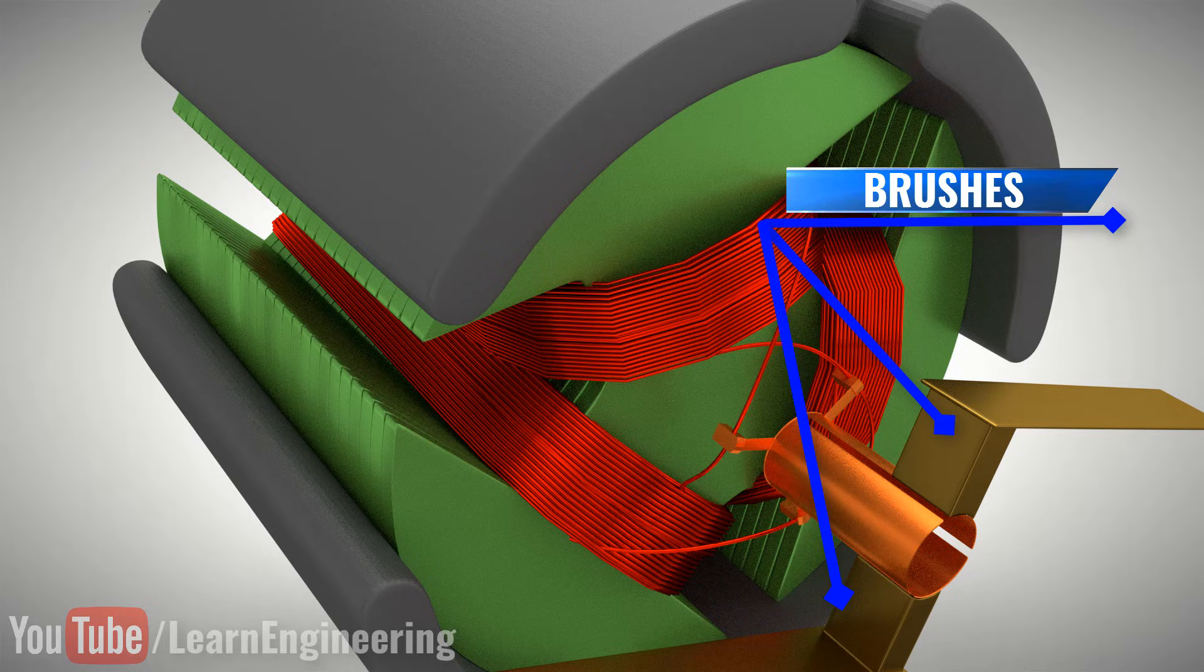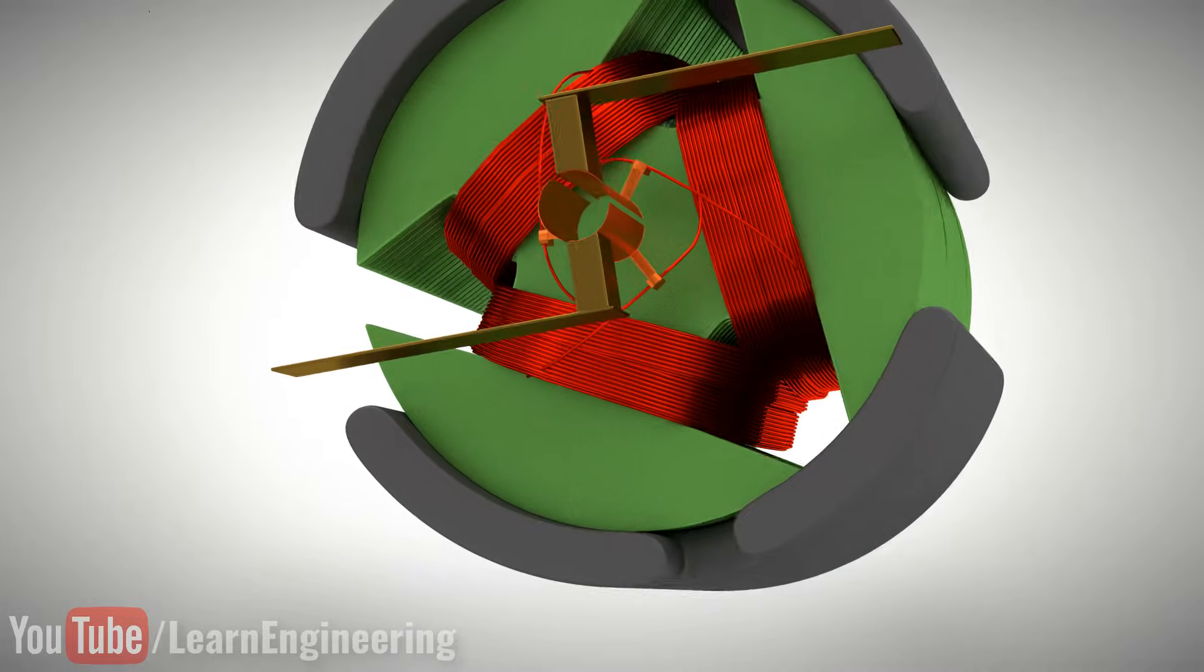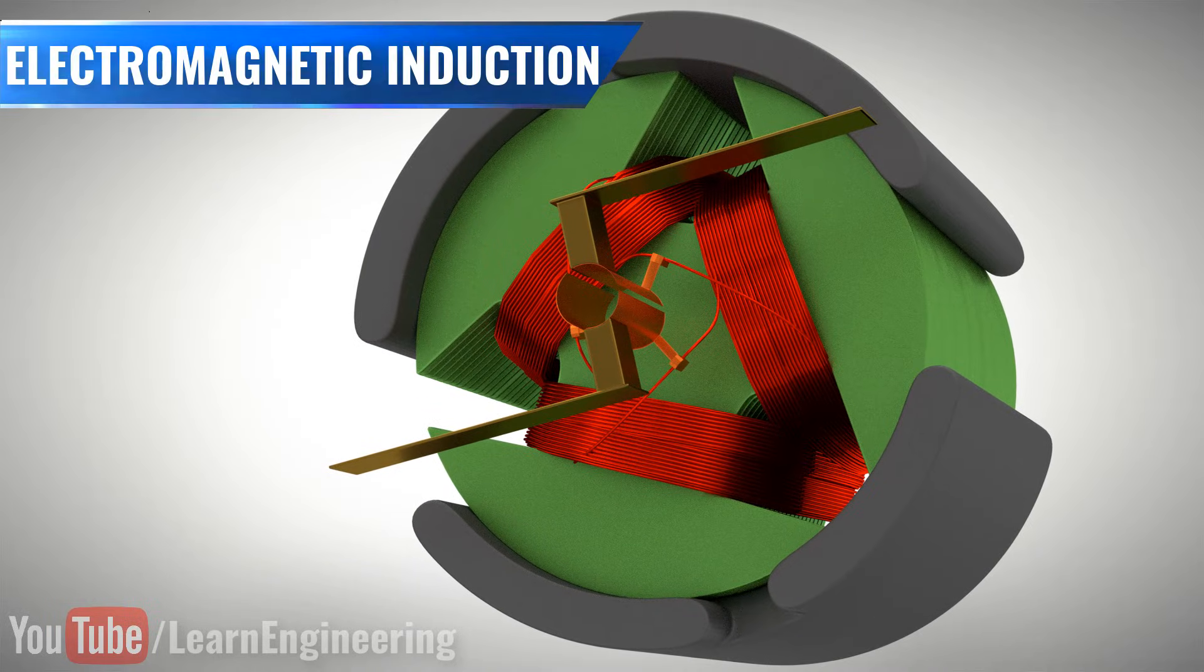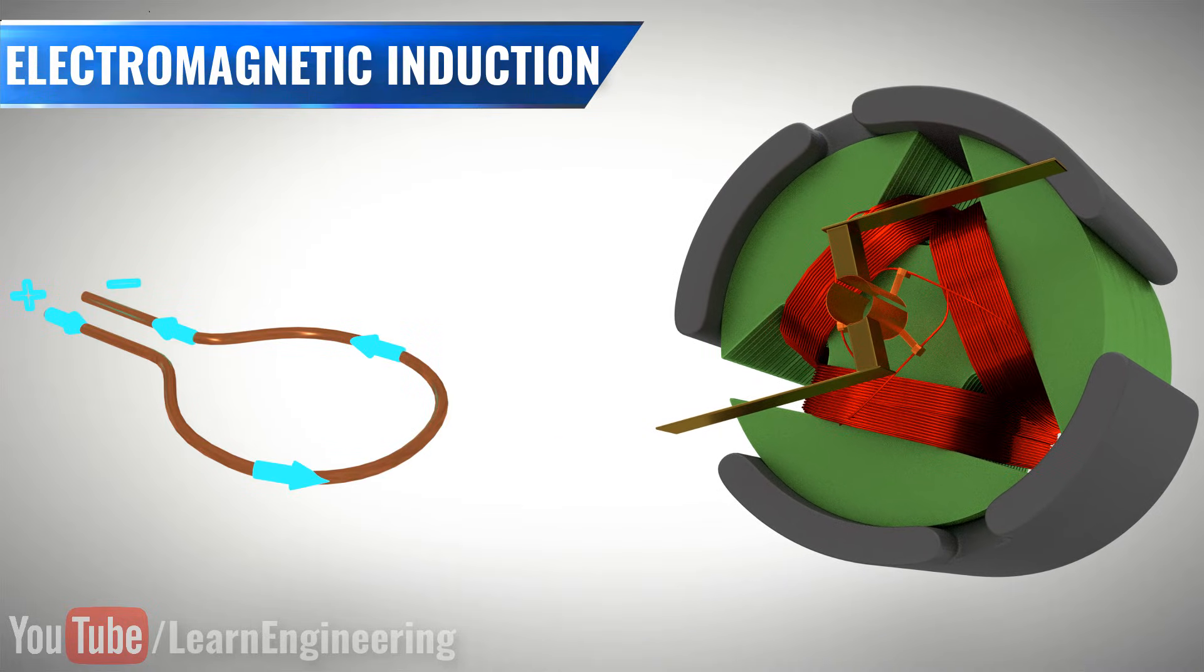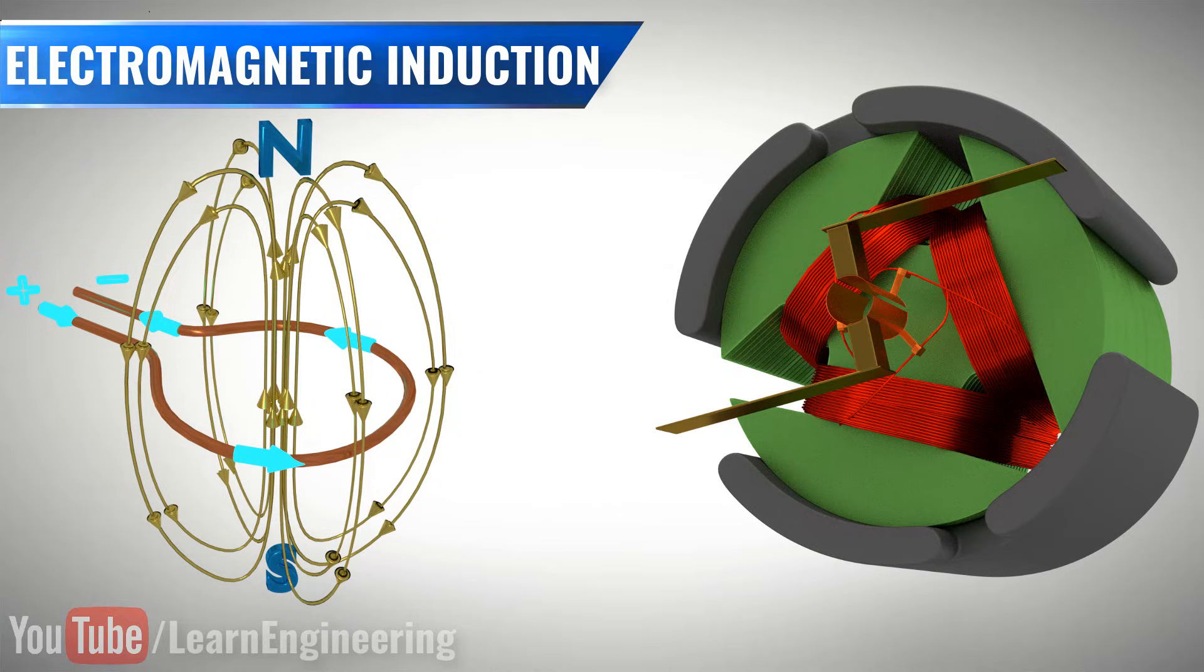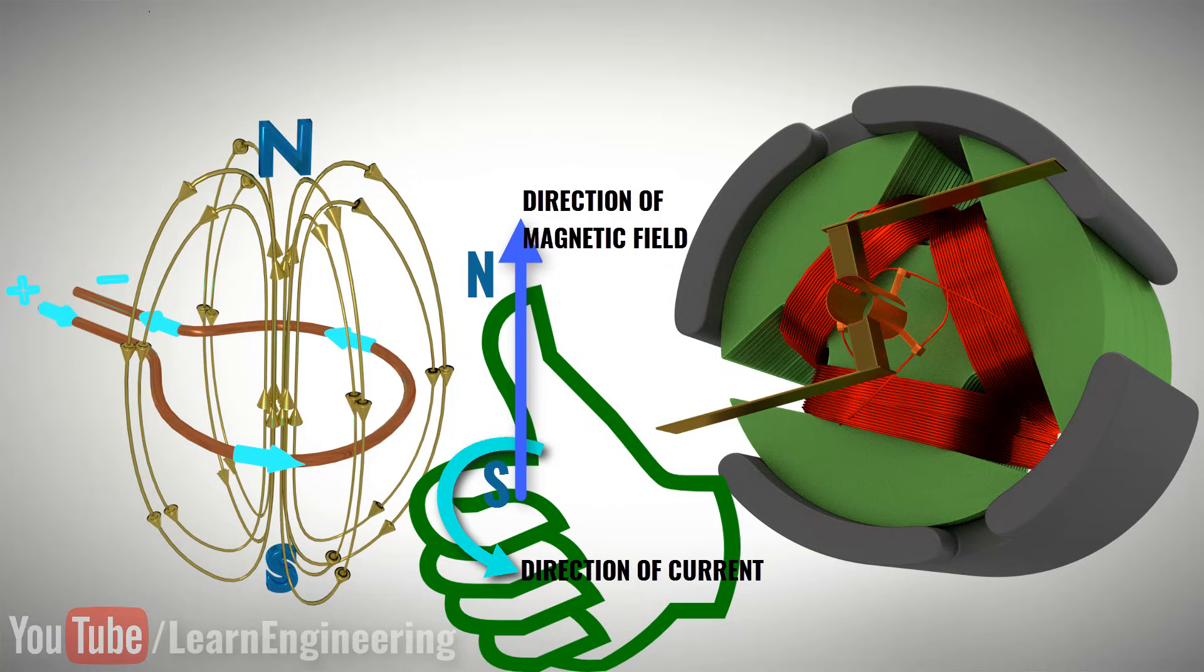Now let's get into its working. The working of this motor can be easily explained with the help of simple electromagnetic induction. This means that a coil carrying electricity will become an electromagnet, as shown. You can easily predict the direction of this electromagnet with the help of the right-hand thumb rule.